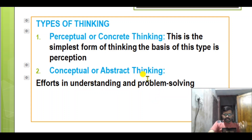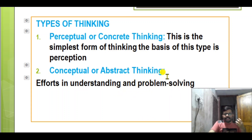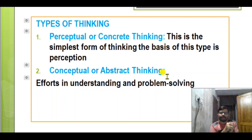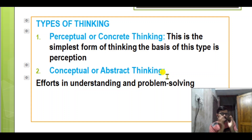Next is conceptual or abstract thinking. It involves efforts in understanding and solving problems. Abstract thinking is internal. For example, we have an idea of a painting — the color, the culture — this is an internal idea, and that is abstract thinking.